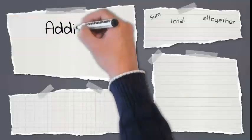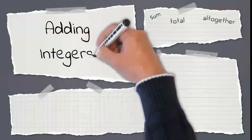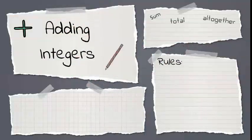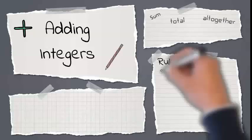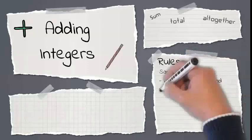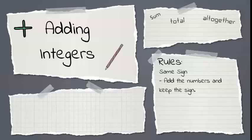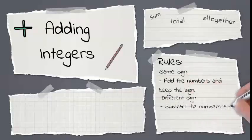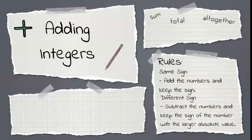Let's start by reviewing adding integers. The rules for adding integers depend on the signs of the numbers that you're adding. If they have the same signs, add the numbers and keep the sign. If they have different signs, subtract the numbers and keep the sign of the number with the larger absolute value.